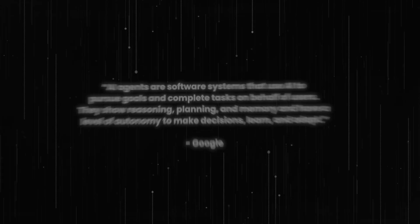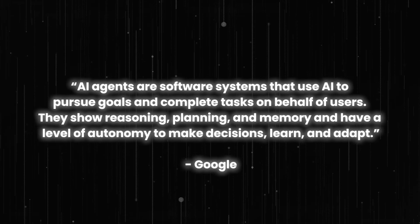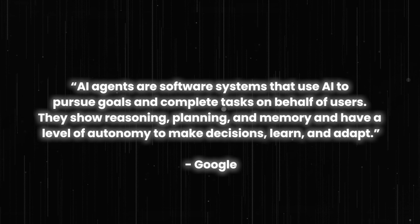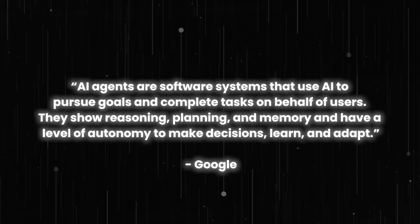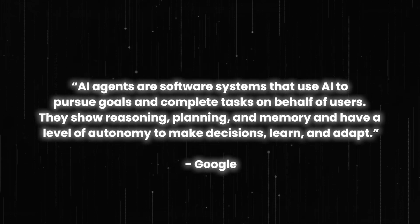First, I'm going to show you two technical definitions of AI agents, because it's important to know what these are. And then I'm going to tell you why I don't think these are practically useful and what a better practical definition is. So let me read out the definition of an AI agent from Google: An AI agent is a software system that uses AI to pursue goals and complete tasks on behalf of users. They show reasoning, planning, and memory, and have a level of autonomy to make decisions, learn, and adapt.